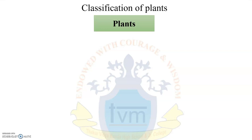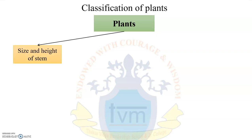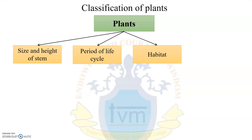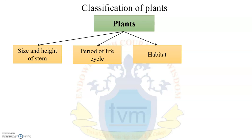According to him, plants can be categorized into four categories: size and height of stem, period of life cycle, habitat, and whether the plant bears flowers or not.